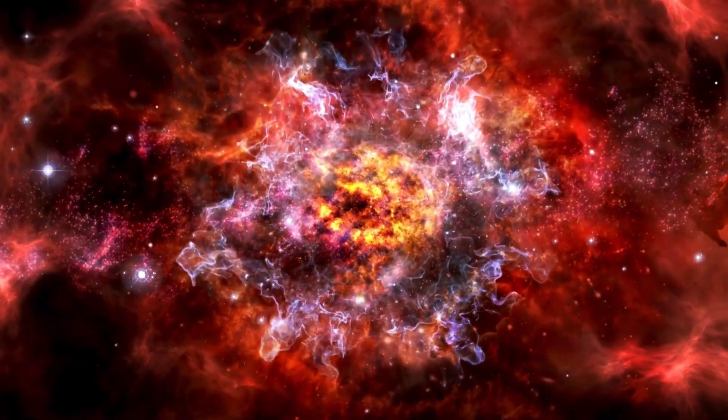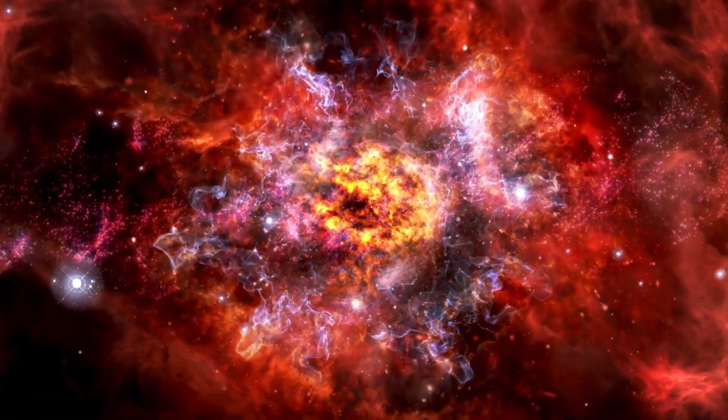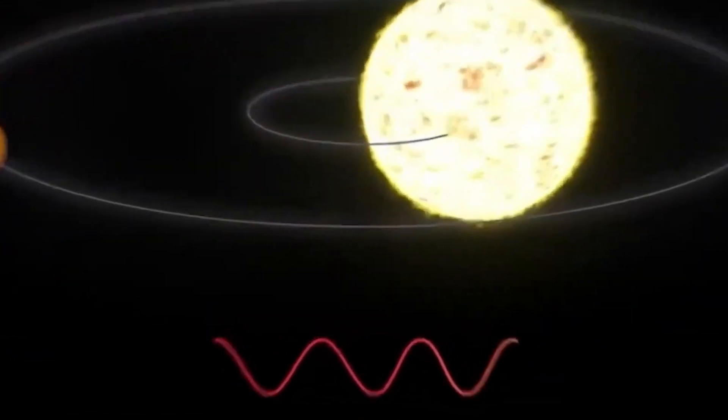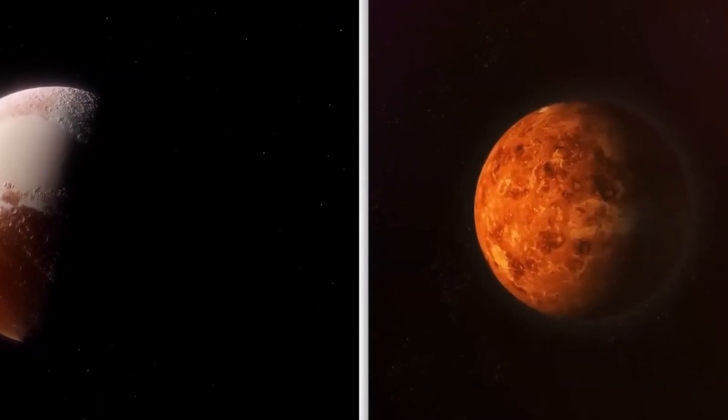There are also hot Jupiters, gas giants that orbit incredibly close to their host star, existing in a scorching world with temperatures that could melt metal. Imagine seeing such a planet up close with its raging storms and extreme heat.